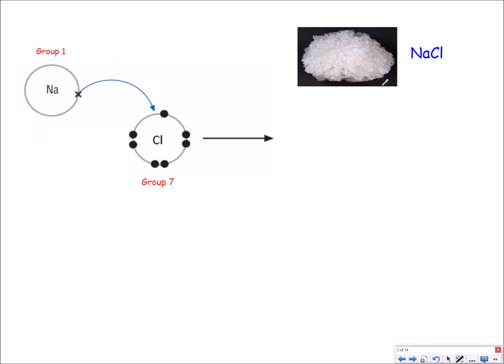Now the example of an ionic compound I'm going to use is sodium chloride which is also known as table salt.